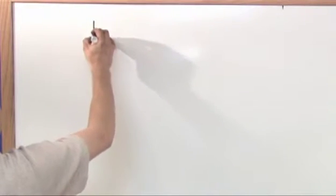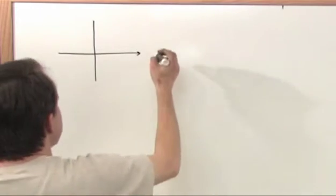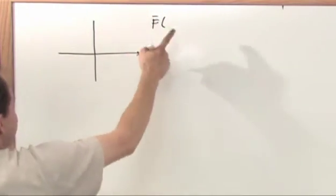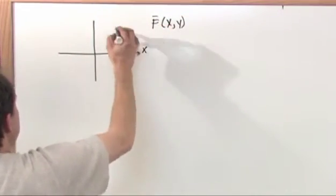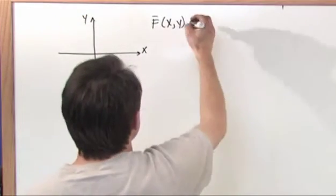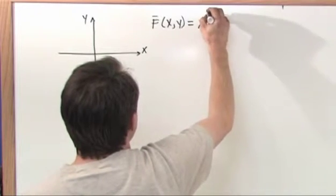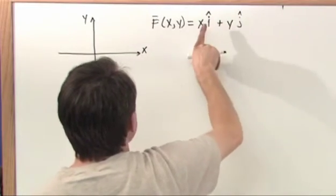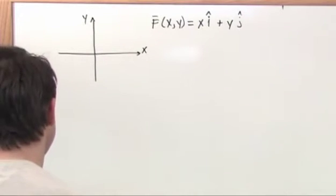In two dimensions, because sometimes it's easier to start in two dimensions, what if I had a vector field like this. The vector field might be written like this. The bar on top means vector just like always. F(x,y), because I'm talking about two dimensions. x comma y. Let's say the vector field is x in the i direction plus y in the j direction. Don't forget i just means x unit vector and j means y unit vector. Well what would this look like?